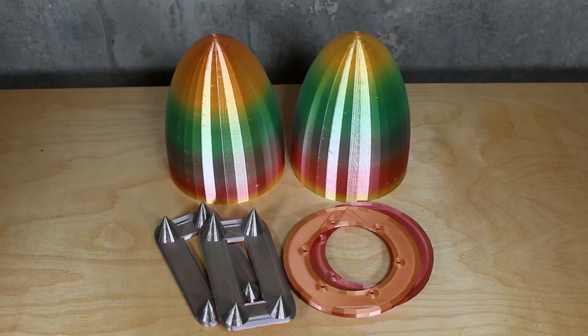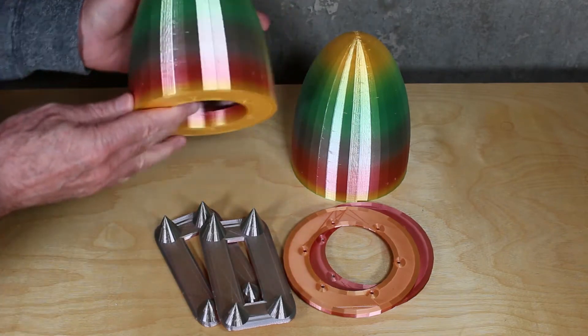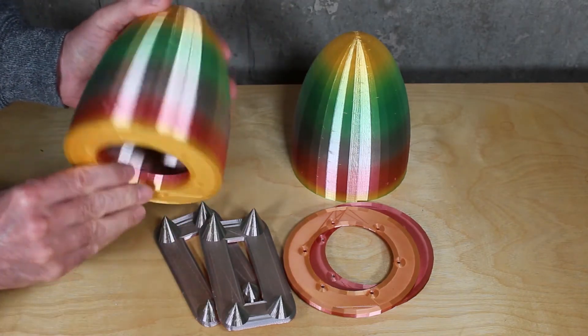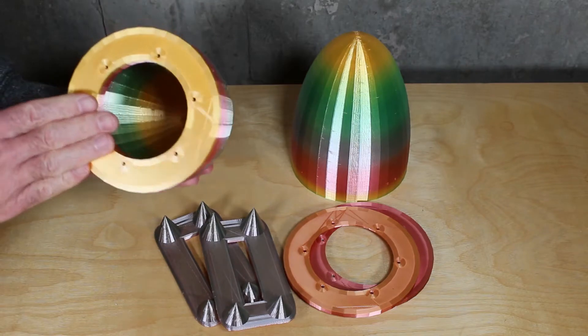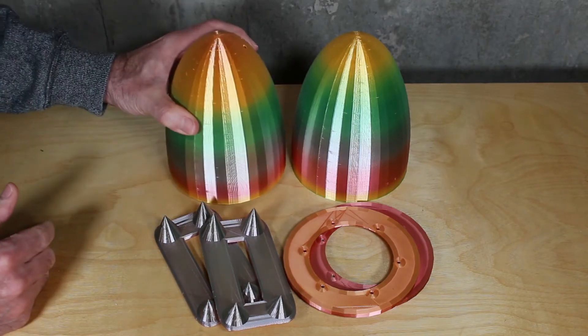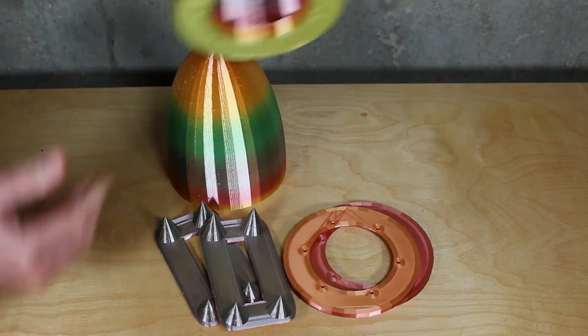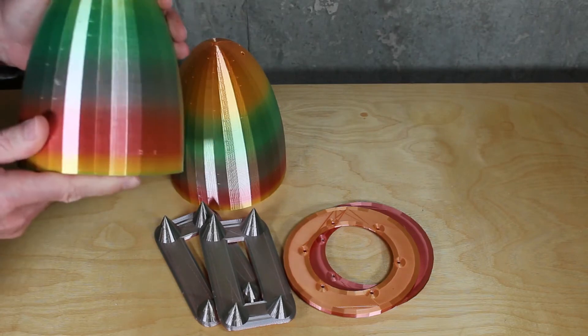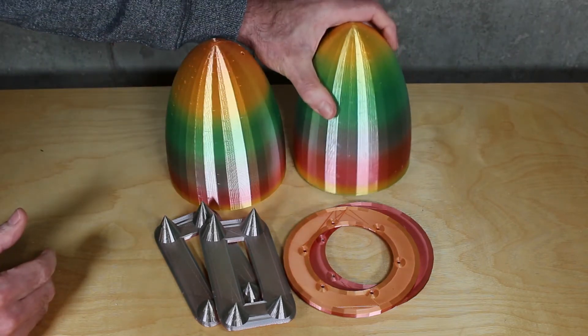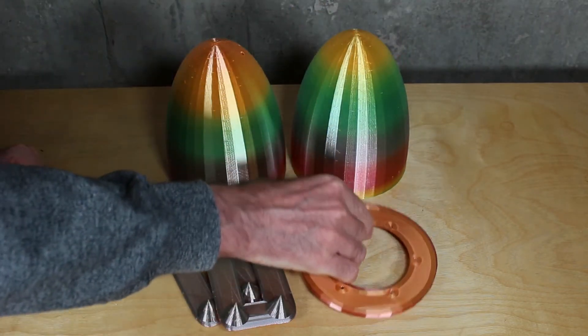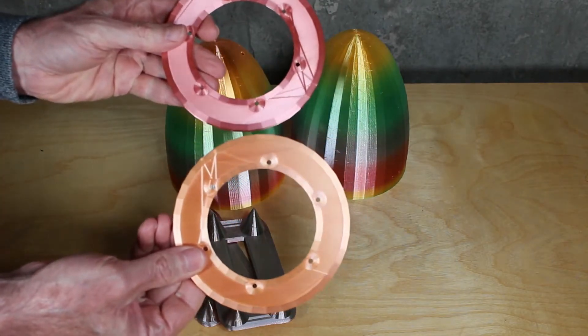So after about four days of printing we end up with two of these rainbow colored speaker enclosures, and so far this is all off a single spool. We end up with two faceplates or bezels and two speaker stands.